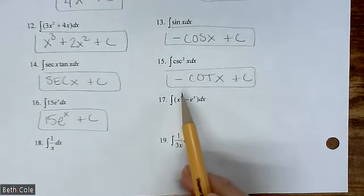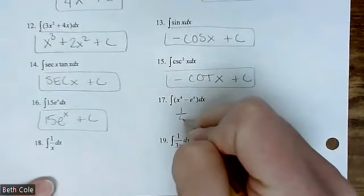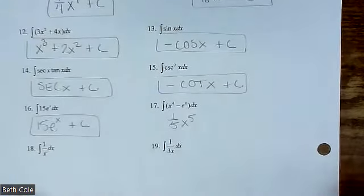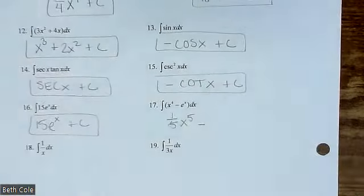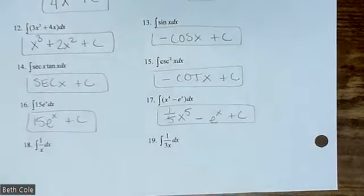All right, how about this one? Antiderivative for x to the fourth. Good? Good. One-fifth x to the fifth minus e to the x plus c. You guys are on top of that plus c. That's awesome.